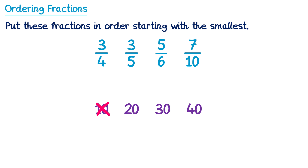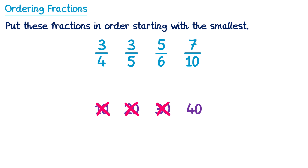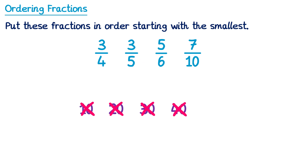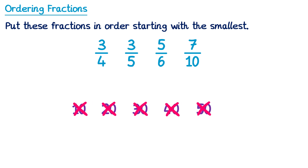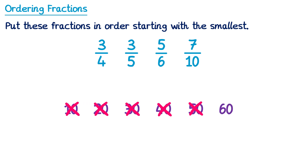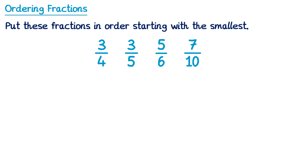What about 30? Well 5, 6, and 10 go in, but 4 doesn't this time, so we can't use 30 either. What about 40? Well 4, 5, and 10 go in, but not 6, so we can't use 40. What about 50? Well 5 and 10 go into 50, but not 4 and 6. So we keep going — what about 60? Good news: finally 4, 5, 6, and 10 all go into 60. So we can use 60 as our new denominator.